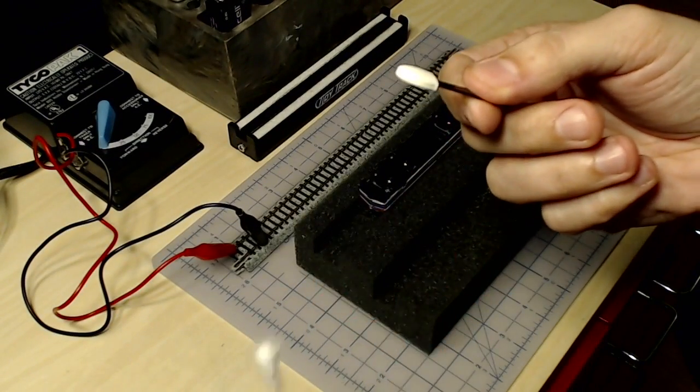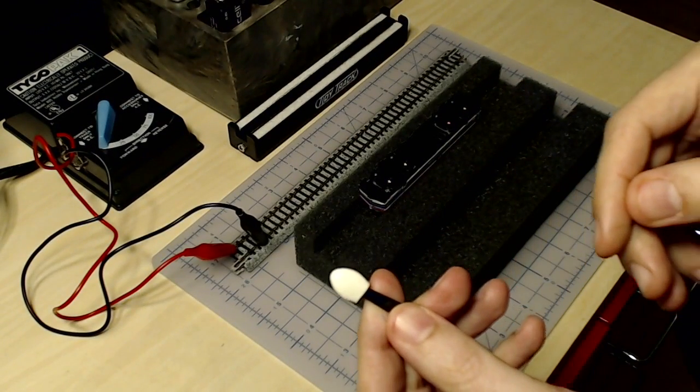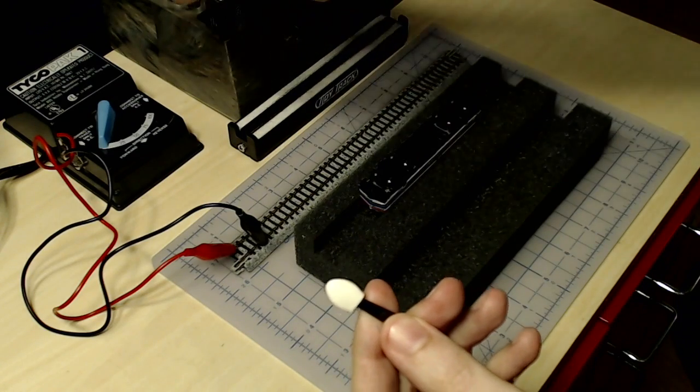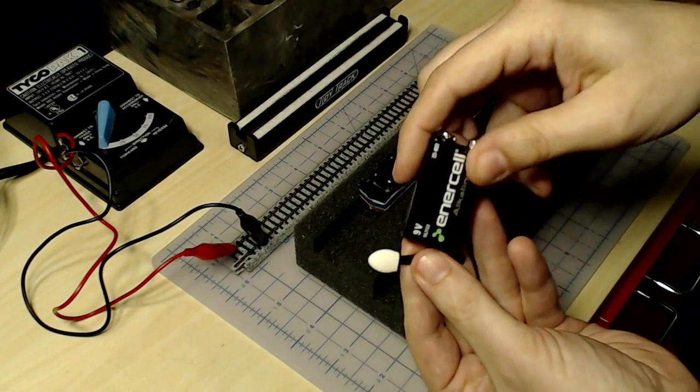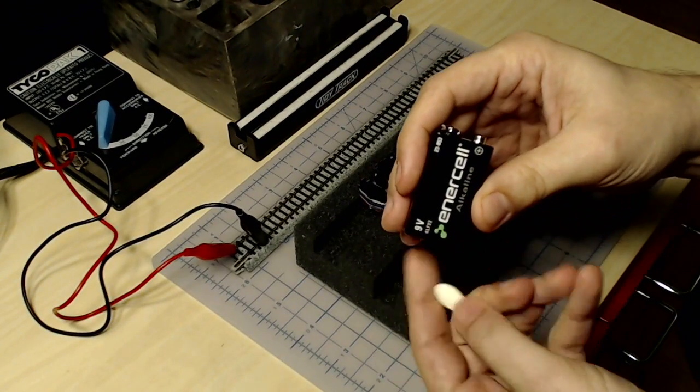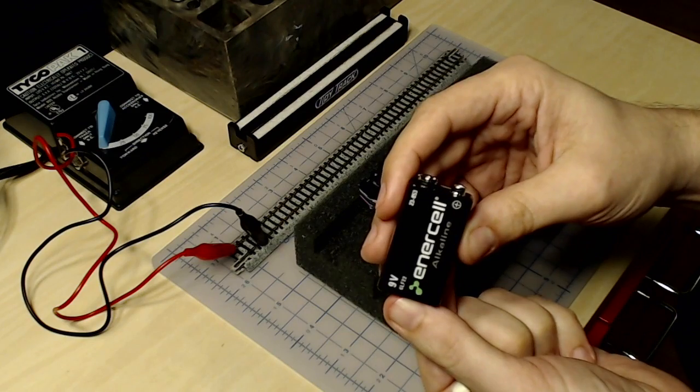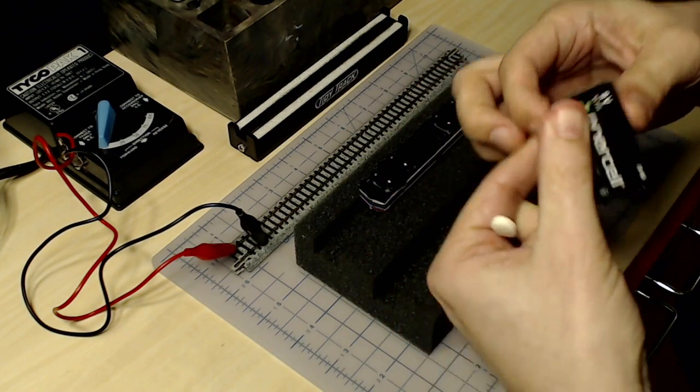So to use the applicator, or to power the locomotive rather, I use a 9-volt battery, and it just so happens that the terminals are at just the right width that I can hold the terminals to the wheels and it will power the locomotive.